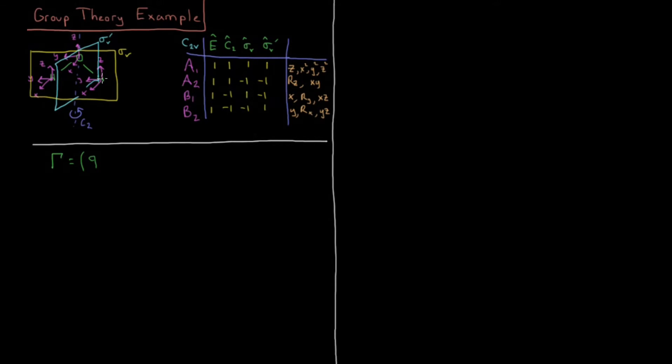If I do C2, these three all move off their axis. These three all move. They switch places. The positive X becomes a minus X. Positive Y becomes a minus Y. Positive Z stays the same. So this is minus 1, minus 1, plus 1, 0, 0, 0, 0, 0. So that ends up being a total of minus 1 for C2.